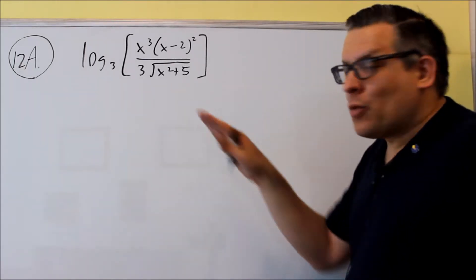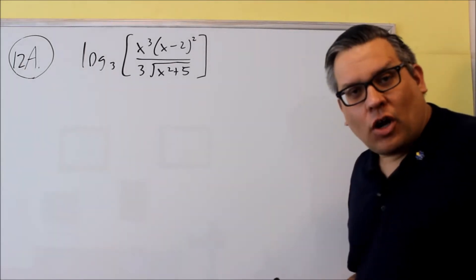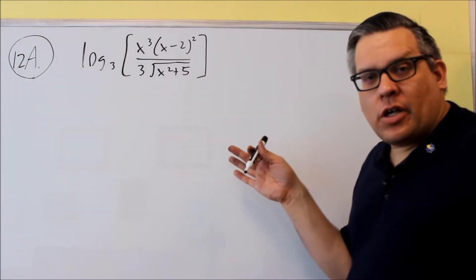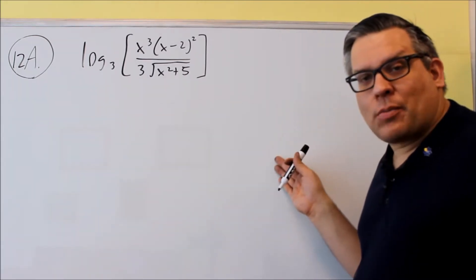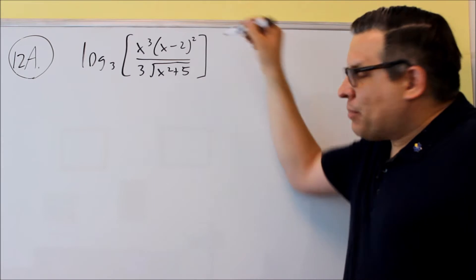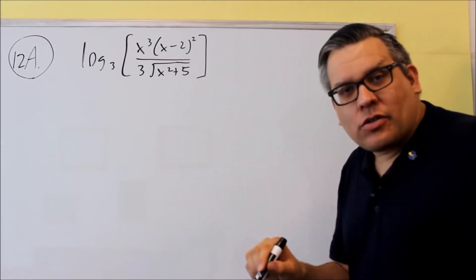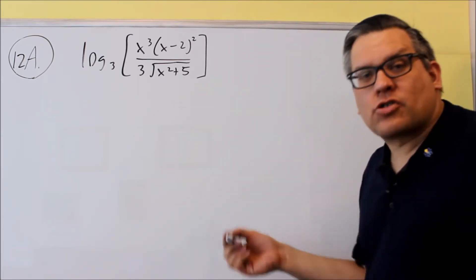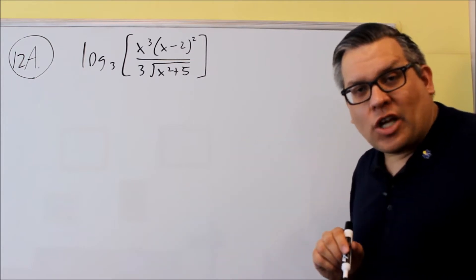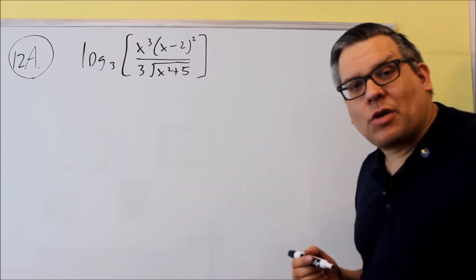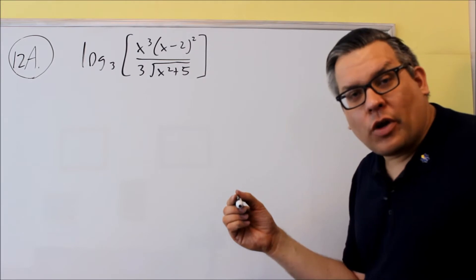For number 12, they're going to give you a problem where you want to expand out the log, which expanding means that you want to separate this all into separate logs. Any powers, you want to bring those down in front, and also if you end up with any special logs that you can evaluate, like if both numbers are the same, like log base 4 of 4 or something like that, you want to go ahead and evaluate that.